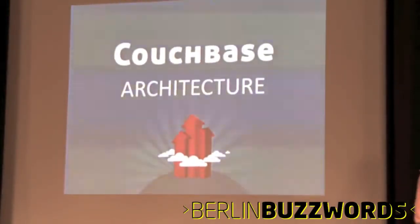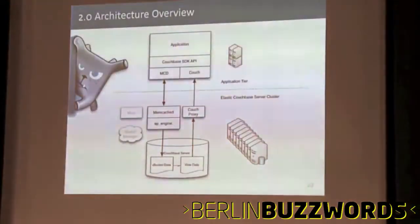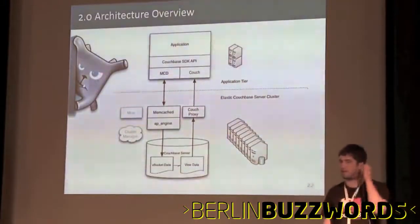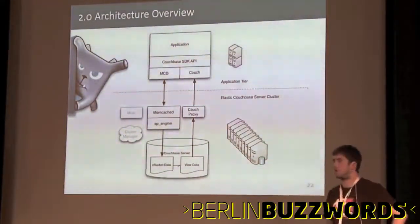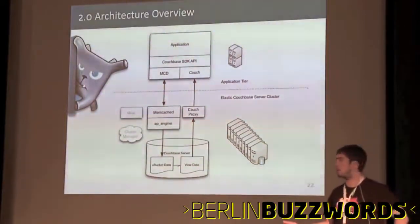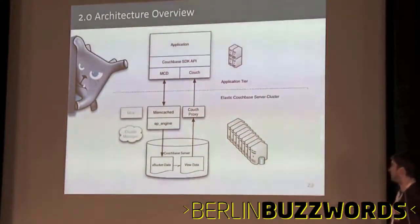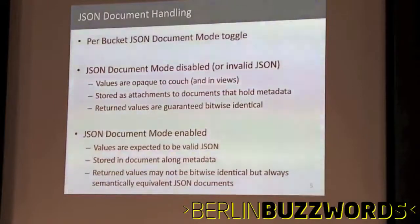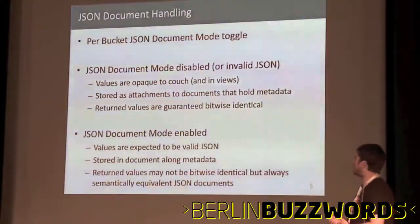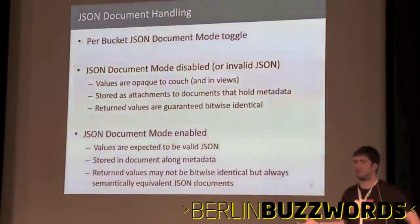So that's how CouchDB and Membase work individually. Right now Membase is a persistence layer to Memcached, using SQLite for its persistence via an EP engine which stores data from Memcached to disk. What's happening now is that's going to be replaced with CouchDB as the persistence engine. Data that gets written into Memcached is going to be written as a document straight into CouchDB. If you don't need to use views or query your data, you can turn it off and everything's pretty much the same as before.